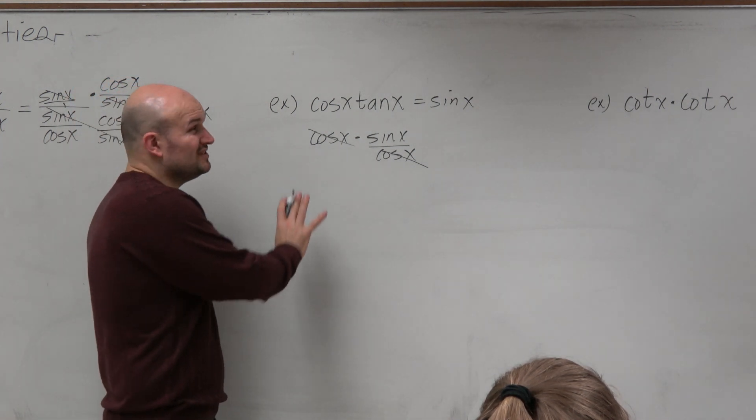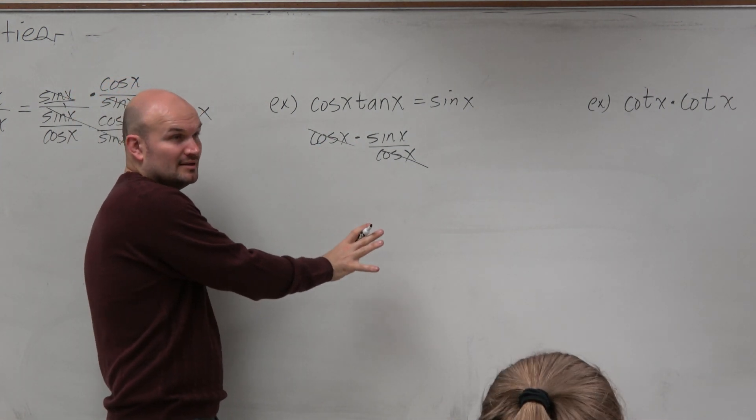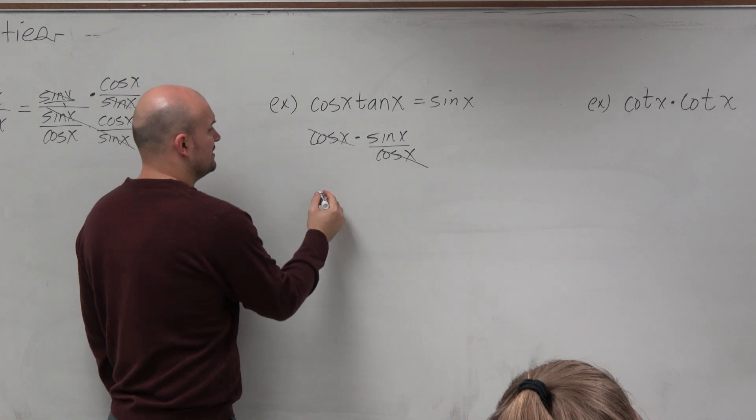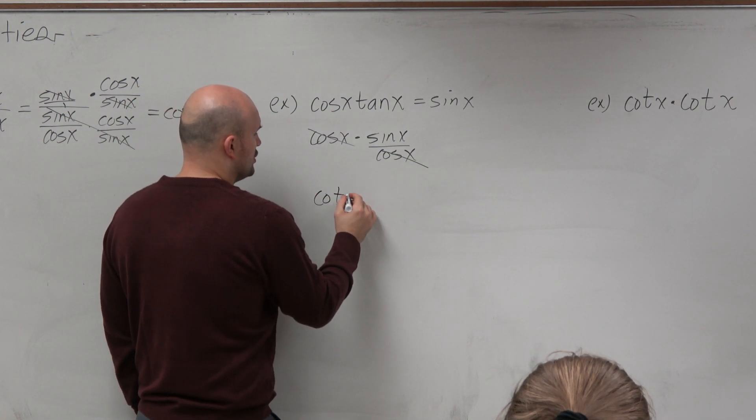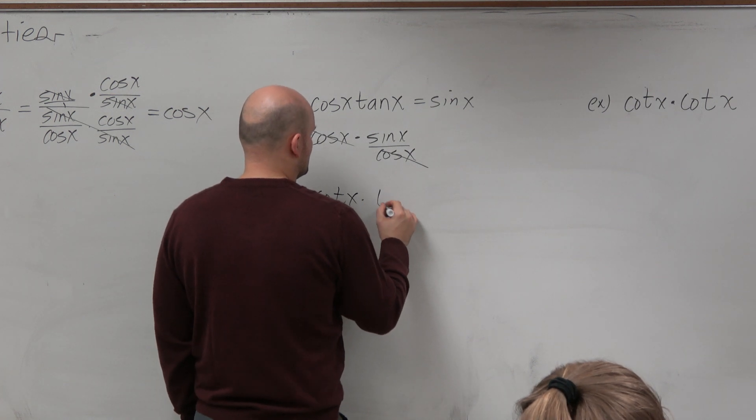But again, be careful. Not always is this the way. Like for instance, let me just do another example real quick. What if it was cotangent of x times tangent of x?